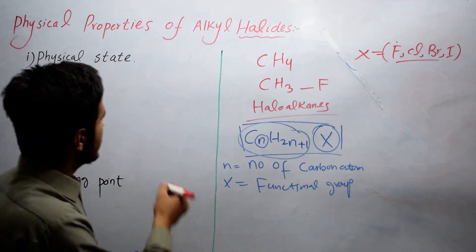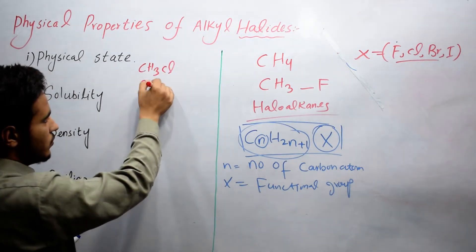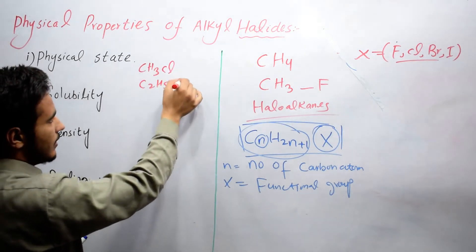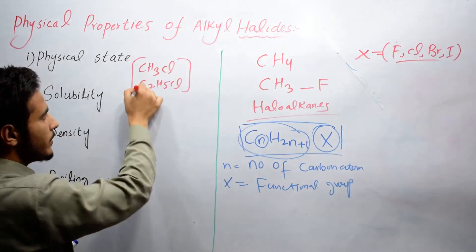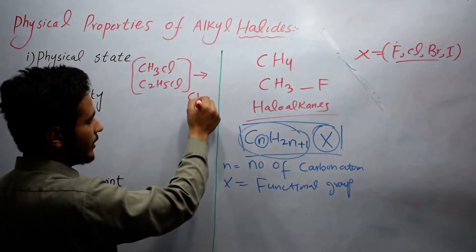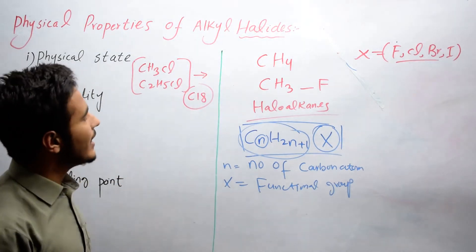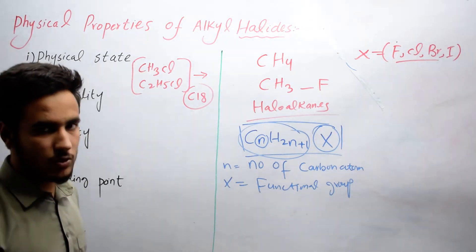For example, CH3Cl and C2H5Cl, these lower members are gases, while 3 to 18 carbon atoms are liquids, while the higher members are solid at room temperature.